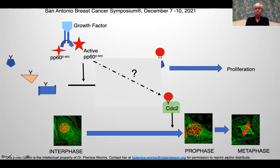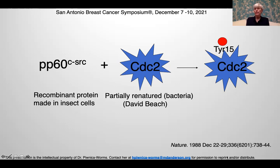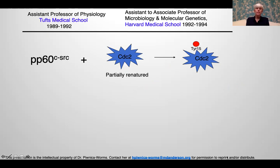David Beach's lab would send me partially re-natured CDC2 — human CDC2 overproduced in bacteria and purified out of inclusion bodies — and I would incubate it with my cellular SRC overproduced in insect cells using a recombinant baculovirus. I was able to phosphorylate CDC2 on the appropriate site, tyrosine 15. But when I started my own lab at Tufts Medical School, I wasn't satisfied with using partially denatured or re-natured CDC2, so I decided to produce CDC2 in its native form by overproducing human CDC2 in insect cells. And when I gave it to cellular SRC in an in vitro reaction, there was no phosphorylation of CDC2.